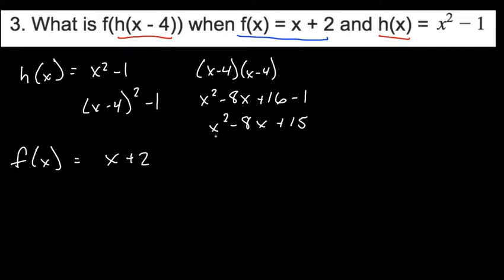So now what we need to do is plug this expression right here into this one. Our x becomes x squared minus 8x plus 15 plus this little 2 at the end. So we're just left with x squared minus 8x plus 15 plus 2.